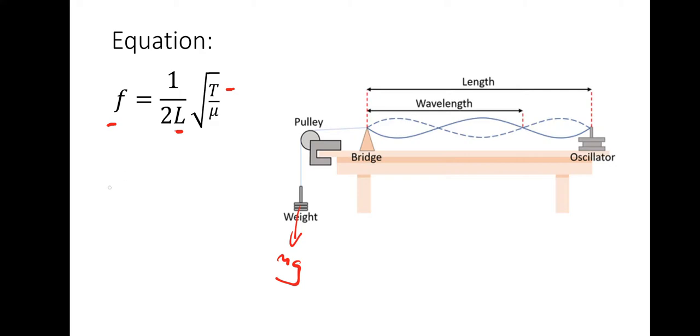And mu is mass per unit length of the string. So the mass of 1 meter length of string, essentially. So mu is mass per unit length, or mass per meter. So kilograms per meter. L is this length, obviously measured in meters. F is the fundamental frequency, the first harmonic. This waveform that I showed you earlier. And that's measured in hertz.